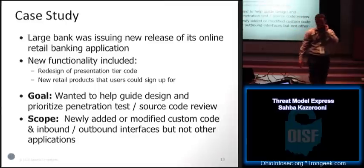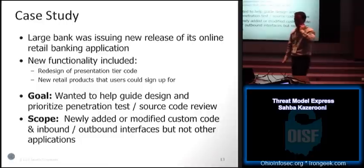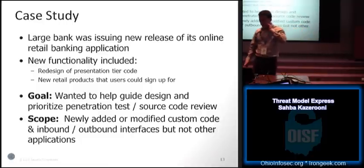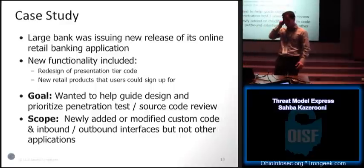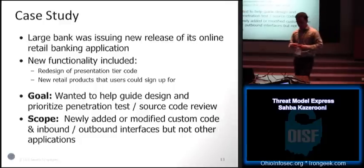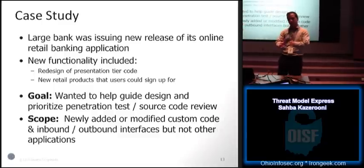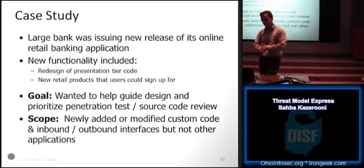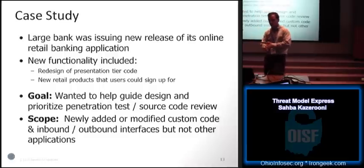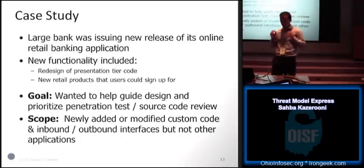I'll do a little bit of a case study as we go along in each of the steps. This was based on a large bank that we regularly do threat modeling for. We were supposed to do a threat model of an application, and what we limited our scope to was the new code that was being written — we don't want to look at the entire application, the focus is the new stuff. And maybe output on interfaces to other applications, but not the other applications themselves. Really, really focused.